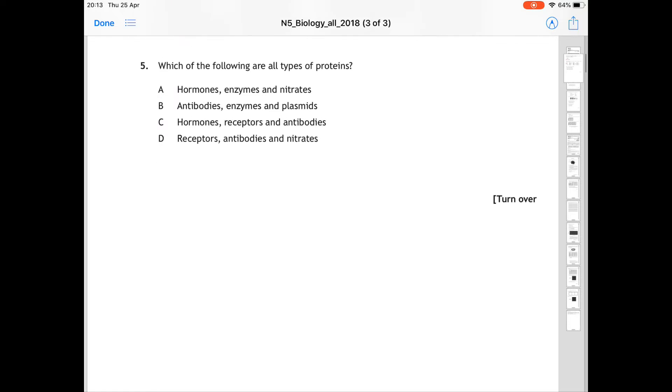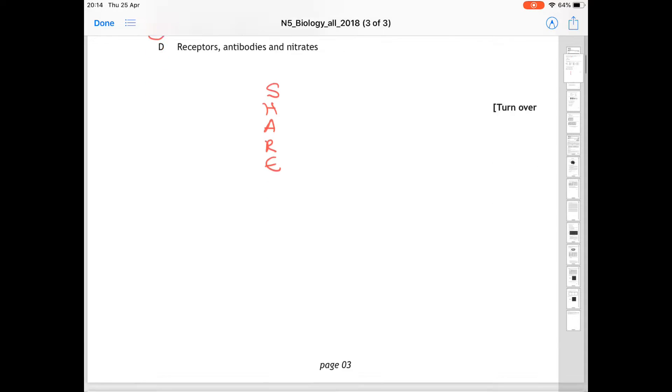For question 5, which of the following are all types of proteins? So you should hopefully remember SHARE. So structural, hormonal, antibodies, receptors, and enzyme. The one here that is correct is C, hormones, receptors, and antibodies, because the rest of them have an incorrect group of proteins in them.